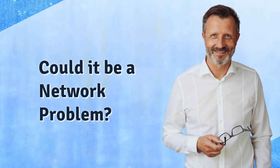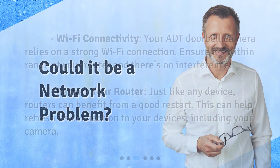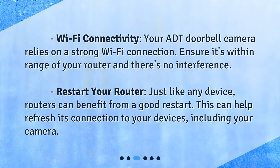Could it be a network problem? Wi-Fi connectivity — your ADT doorbell camera relies on a strong Wi-Fi connection. Ensure it's within range of your router and there's no interference. Restart your router. Just like any device, routers can benefit from a good restart. This can help refresh its connection to your devices, including your camera.